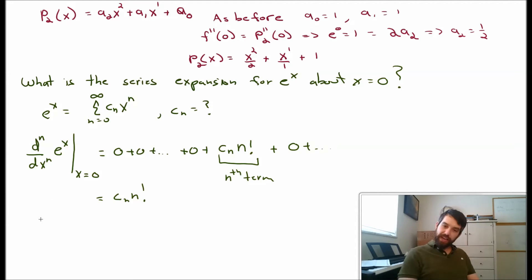On the left hand side, I know what the nth derivative of e^x is. It's just e^x. So if I plug in 0, I get e^0, or in other words, 1 equals cn times n factorial. And rearranging, I have cn is 1 over n factorial.